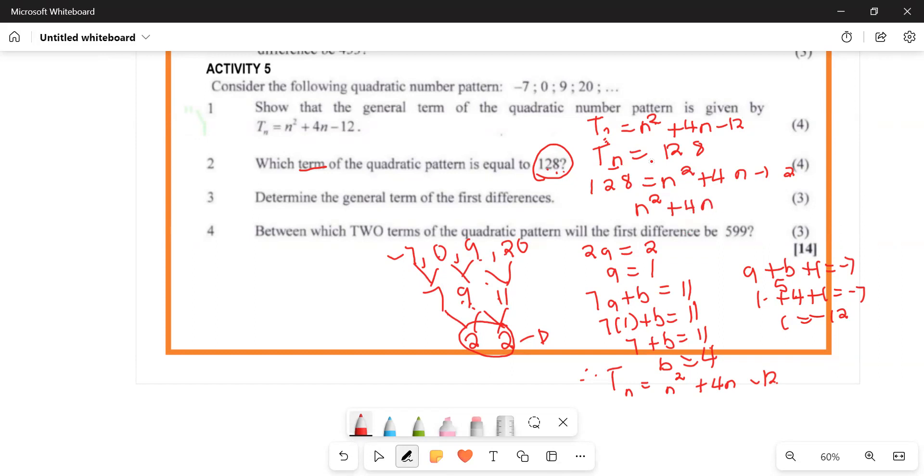Transposing terms to one side, we get 2n² + 4n - 140 = 0. Simplifying further: -12 - 128 = -140.